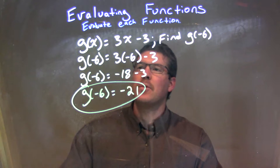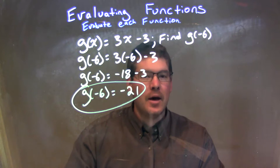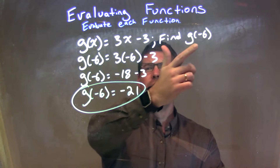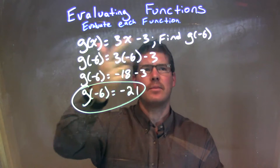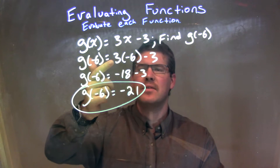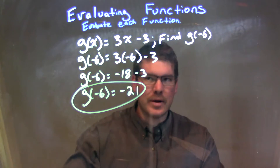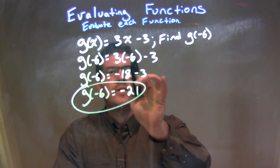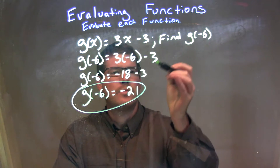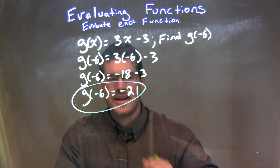So, let's recap. We're given g of x is equal to 3x minus 3, and we have to find g of negative 6. So, every single time I see an x, I'm going to put a negative 6. So, I have g of negative 6 right here is equal to 3 times negative 6 minus 3. Well, simplify that. 3 times negative 6 is first. That's a negative 18. We have to subtract the 3 from there to get us a negative 21.